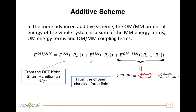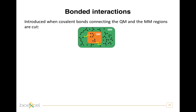The bonded part describes the covalent interactions between quantum atoms — that is the atoms in the quantum region — and classical atoms in the MM region. Therefore, this bonded part is present only when the boundary between the quantum and classical regions cuts a covalent bond connecting a quantum atom to a classical atom, as shown in the picture with the yellow fragments.